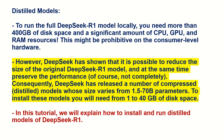Of course, the performance is not preserved completely, as the previous graph shows. Consequently, DeepSeek has released a number of compressed or distilled models whose size varies from 1.5 to 70 billion parameters. To install these models you will need from 1 to 40 gigabytes of disk space. In this tutorial we will explain how to install and run distilled models of DeepSeek R1, whose performance is very similar to the full DeepSeek R1 model.